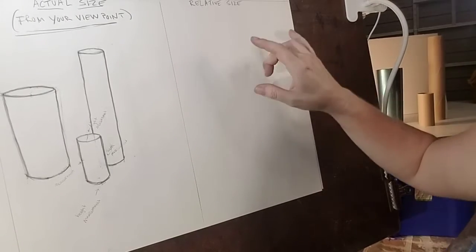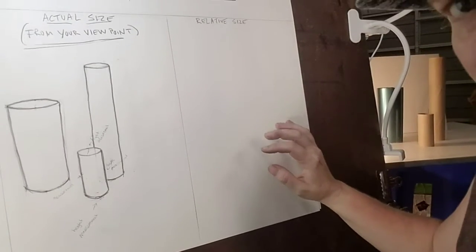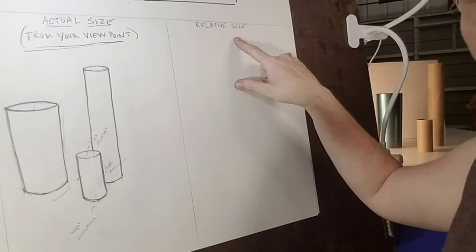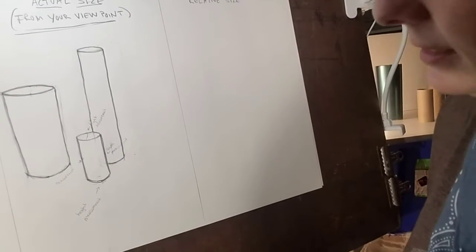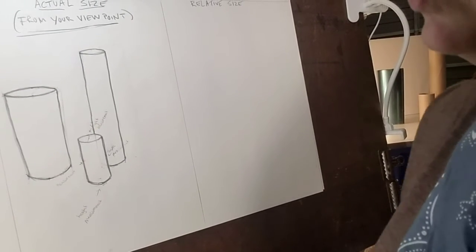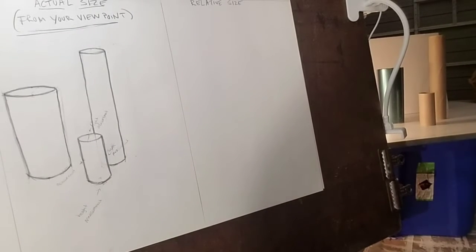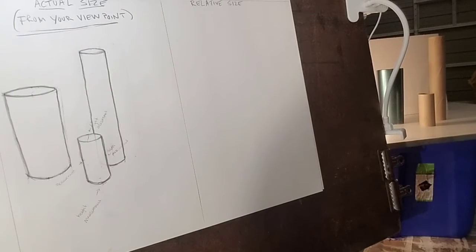Okay, now we're going to move on to the relative size drawing. And what I mean by that is no matter how big you draw this still life, their proportions will remain intact. So how do we do this?